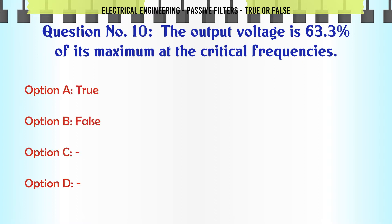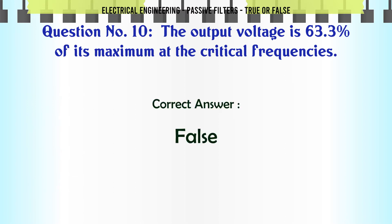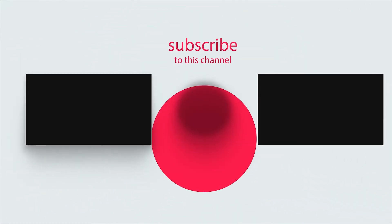The output voltage is 63.3% of its maximum at the critical frequencies. A. True. B. False. The correct answer is: False. The right answer is D.